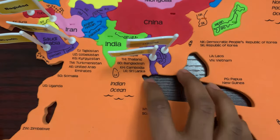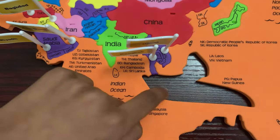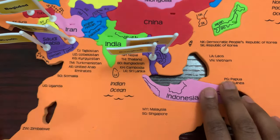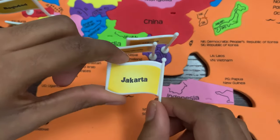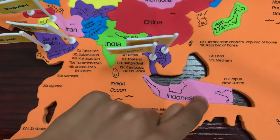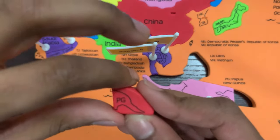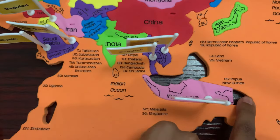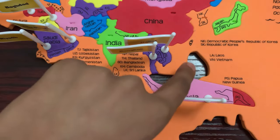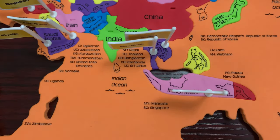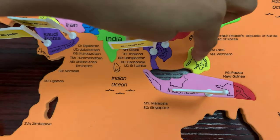And here is Indonesia. Its capital is Jakarta — Jakarta goes right there. And this is Papua New Guinea, it goes right there. And this is the Philippines — it goes right there, and the Philippines' capital is Manila — Manila goes right there.